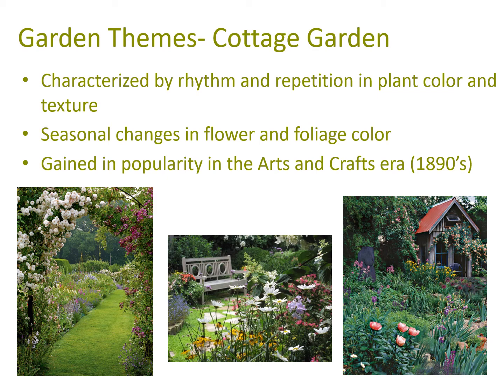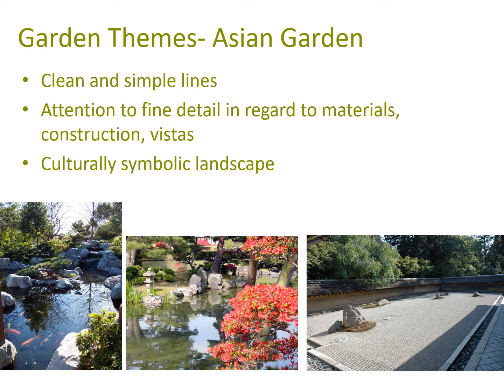Asian gardens usually have clean simple lines and fine attention to detail in regard to materials, constructions, and vistas. They may also include culturally significant symbolic landscapes — in some periods of Asian history, nobility that was not allowed to travel would build miniature recreations of places they had visited in the past at their big estates, and this became part of their culture and is reflected in their landscape design.